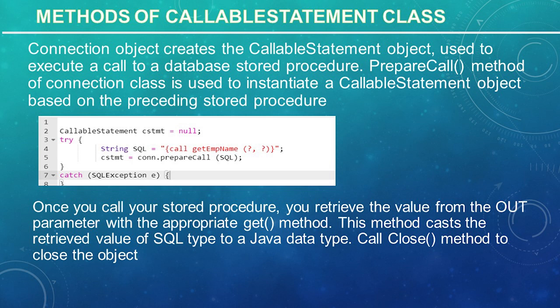Once you call the stored procedure, you retrieve the value from the output parameter using the appropriate get method. This method casts the retrieved SQL type value to a Java data type. Just as you close other statement objects, you should also close the callable statement object. A simple call to the close method will do this. If you close the connection object first, it will close the callable statement object as well. You should always explicitly close the callable statement object to ensure proper cleanup.